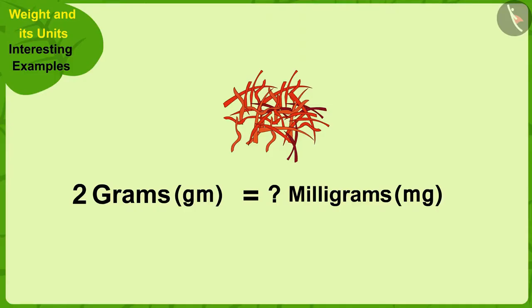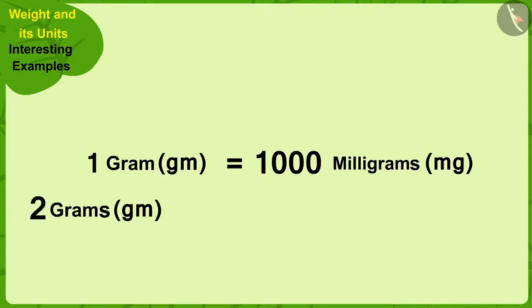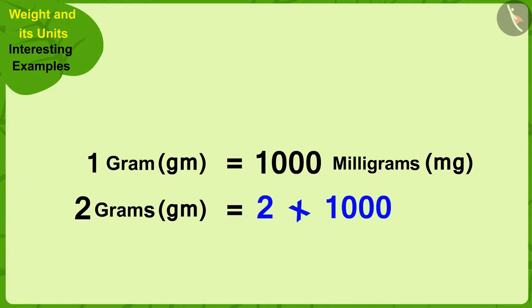Children, can you help Raju find an answer to this question? If you wish, you can stop the video and think of the answer. 1 gram is equal to 1000 milligrams. So, to convert 2 grams to milligrams, we multiply 2 by 1000. In this way, 2 grams of saffron is equal to 2000 milligrams.